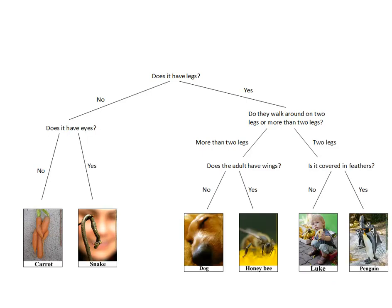And here we have our completed dichotomous key. No legs, no eyes — it's a carrot. No legs, eyes — it's a snake, etc. for all the organisms. This will work fine for these organisms, but it probably will not work if other organisms are added, because they will confuse the issue.